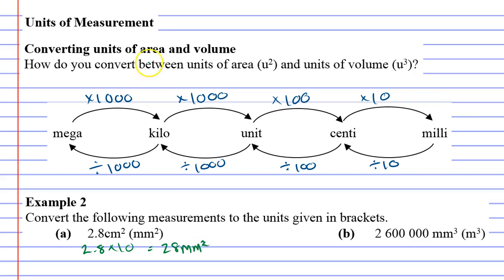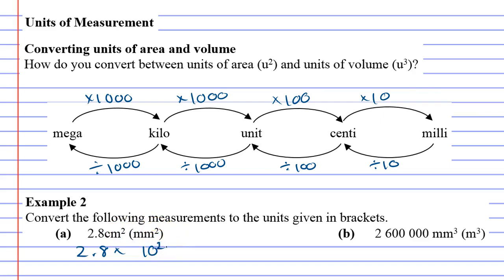That is not correct — that is not how you do it. Here's the correct technique: we know that going from centimeters to millimeters you times by 10. But because this is in square units, you actually need to square the 10. So it's 2.8 times 10 squared, which is the same as 2.8 times 100, giving you 280 millimeters squared.